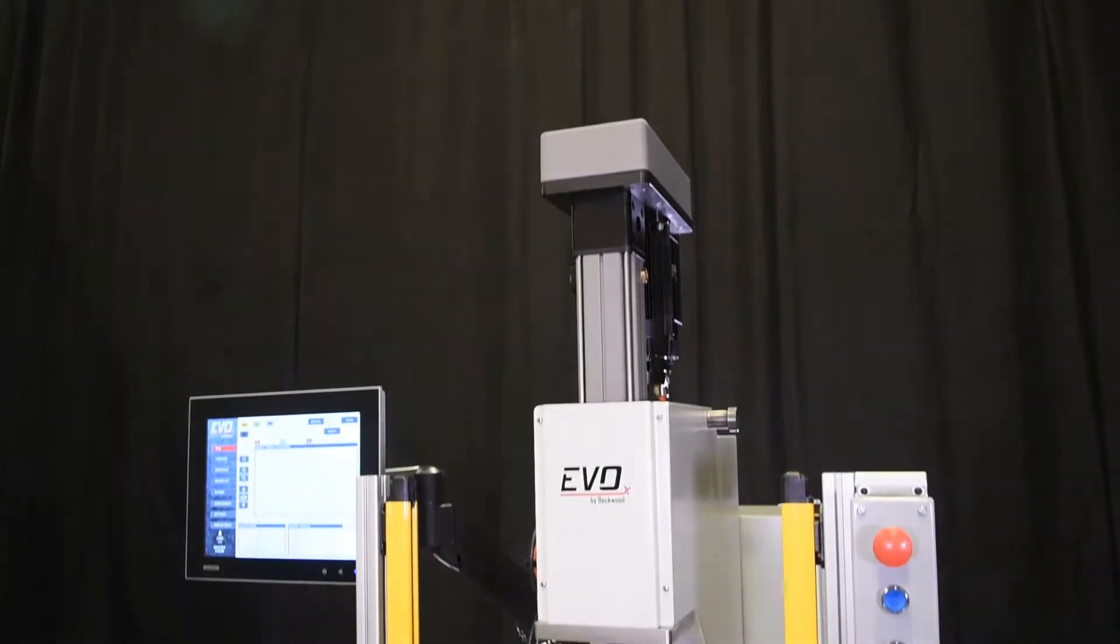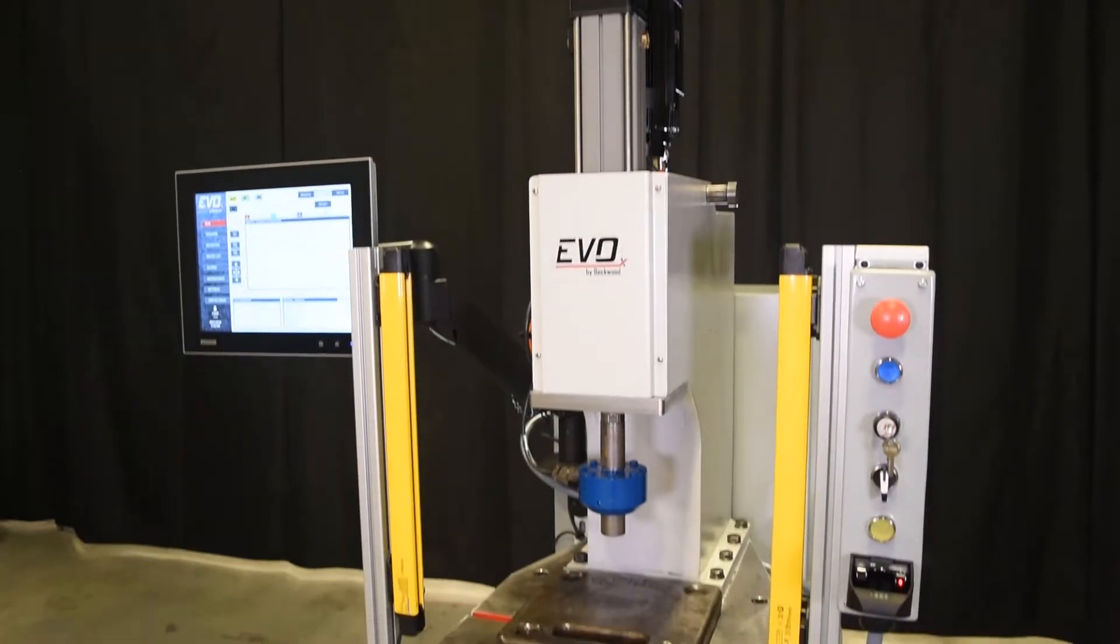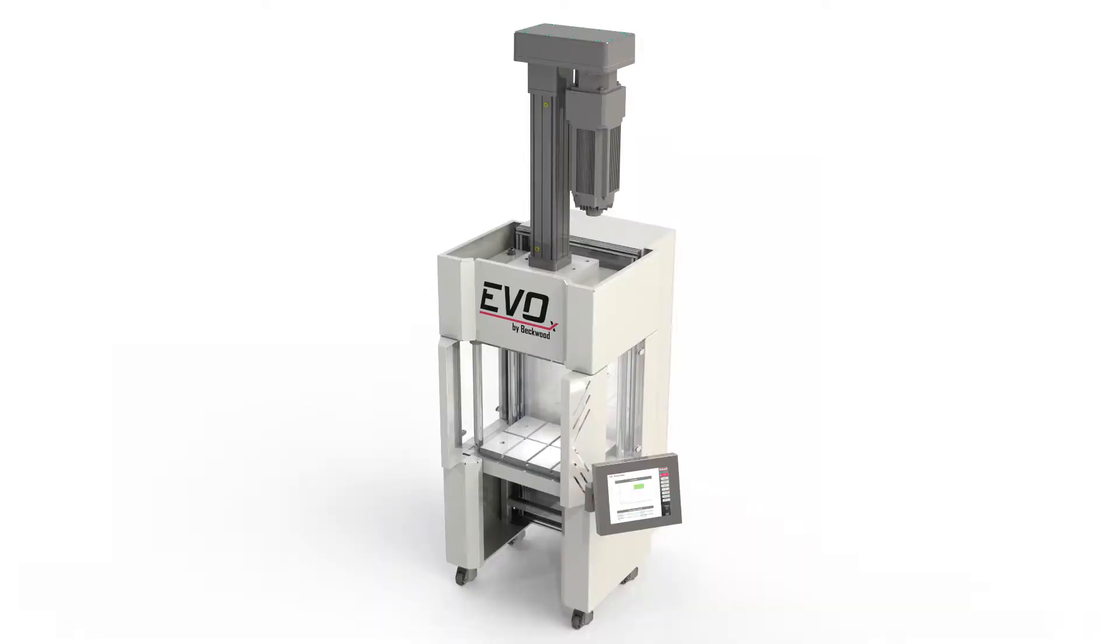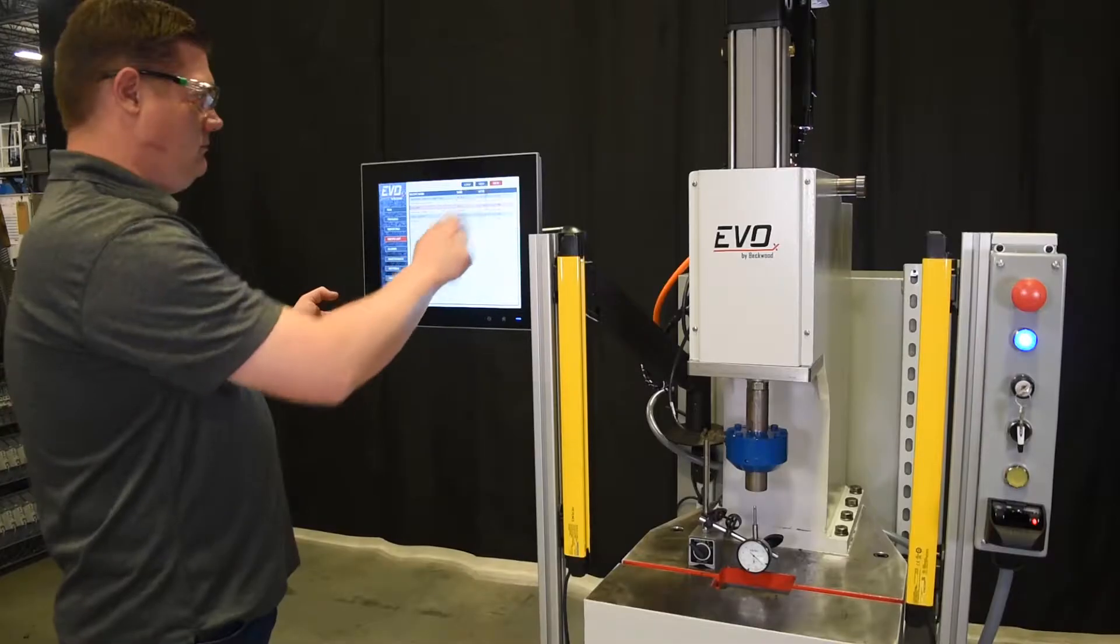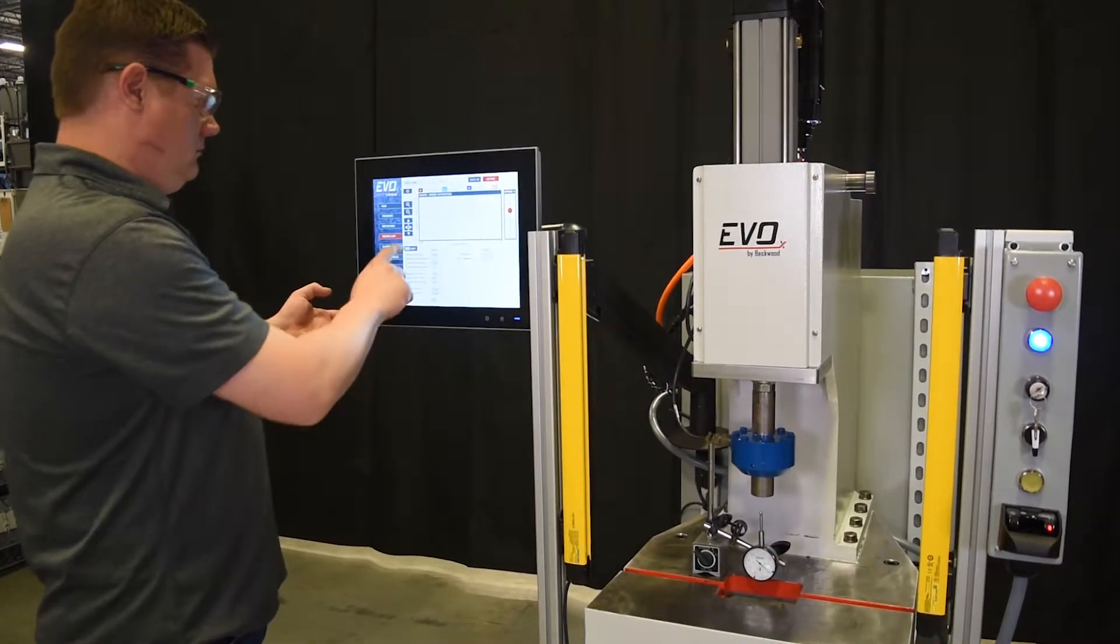The Evo press line has nine different force options ranging from a thousand pounds of force up to 50 tons or a hundred thousand pounds of force. Within that force range, there's three different frame styles: either traditional four post press, a c-frame press with no ram, or a guided ram c-frame press. It's a servo electric press line.